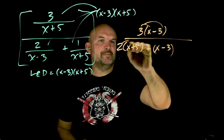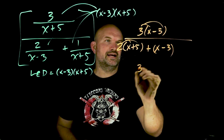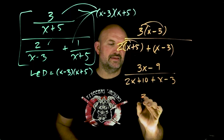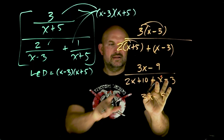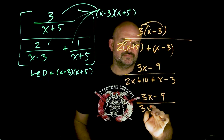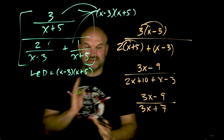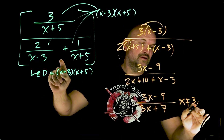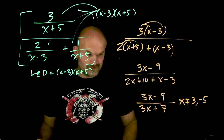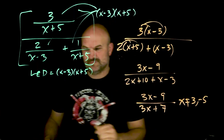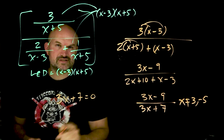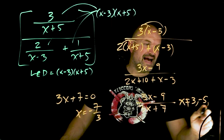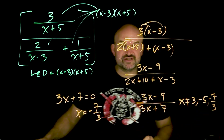Now we have some good old distributive property, so let's apply that. I get 3x minus 9 over 2x plus 10 plus x minus 3. Then we can simplify one more time: 3x minus 9, and combining those gives me 3x plus 7. Now we simply need to check our excluded values. We know x cannot equal positive 3 or negative 5. And for our simplified solution, we set the denominator equal to 0: 3x plus 7 equals 0, subtract 7, divide by 3 — x equals negative 7 thirds. So that is going to be my final excluded solution.